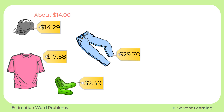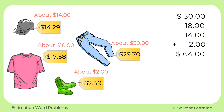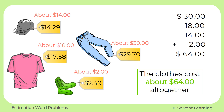The hat is about $14. The shirt is about $18. The jeans are about $30. And the socks are about $2. Now remember our goal is to find the total cost of all these items, so we can add all these rounded prices. Our total is $64, so we could say that the clothes cost about $64 altogether.